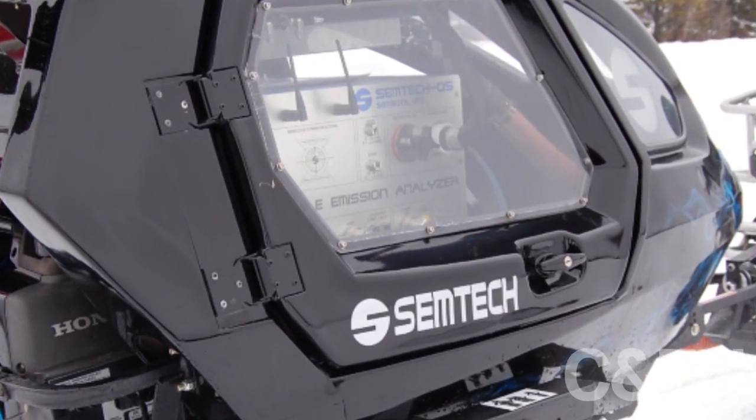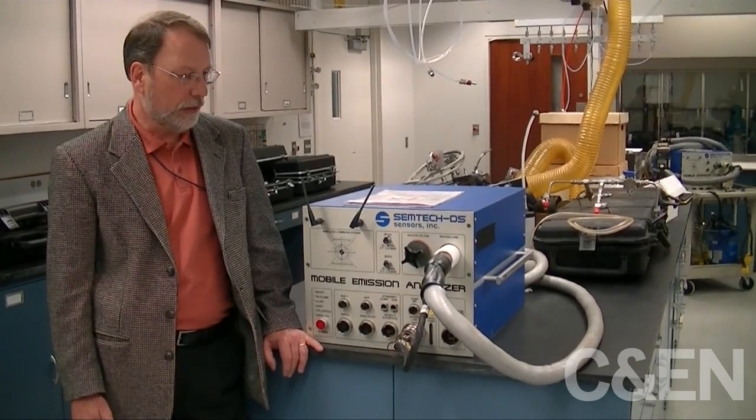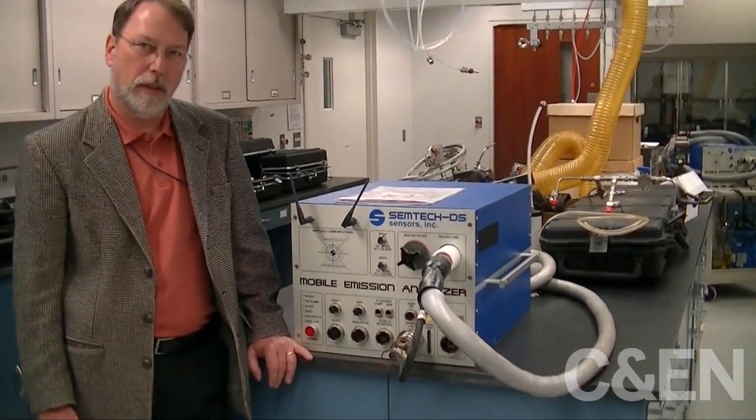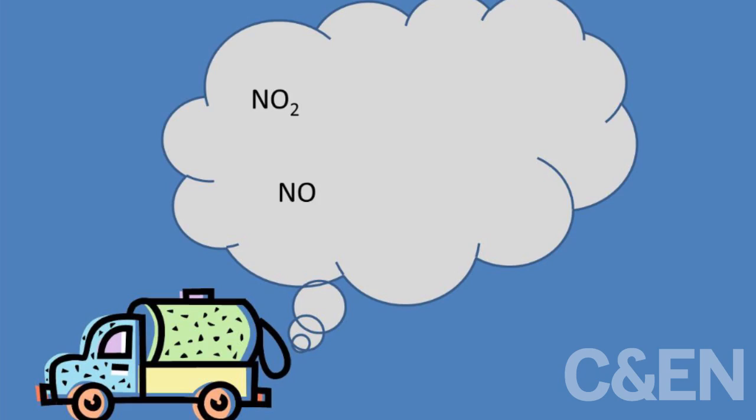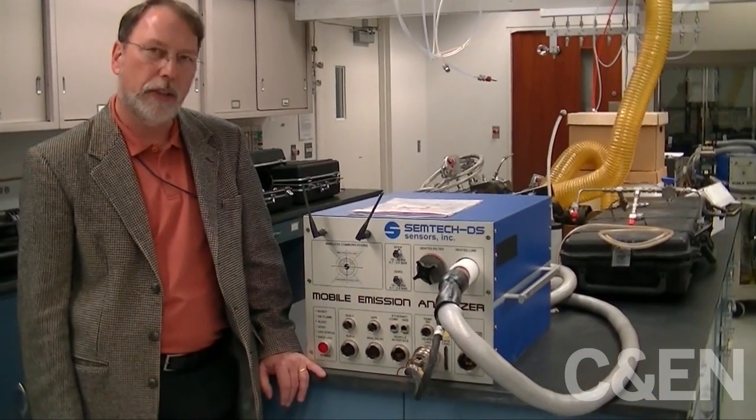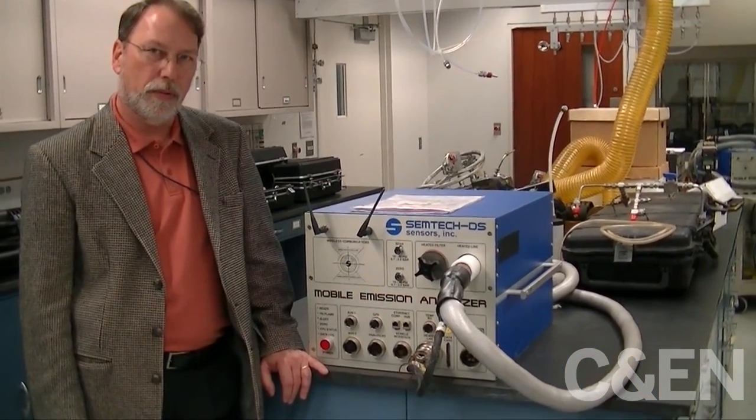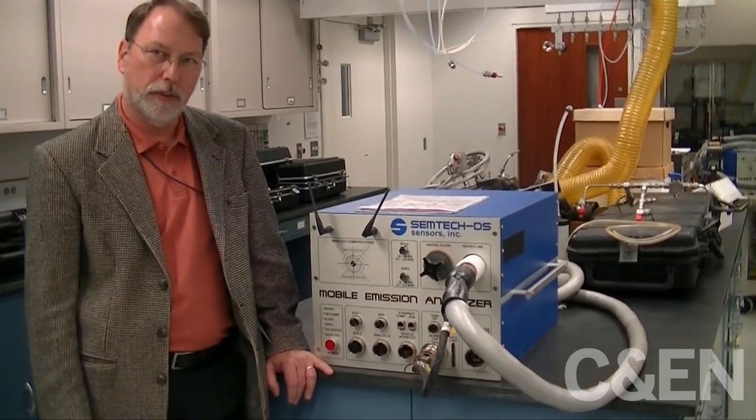The Semtech DS uses non-dispersive infrared technology. It has also a UV measurement for NO and NO2, the oxides of nitrogen, and it also has on board a portable flame ionization detector for hydrocarbons.